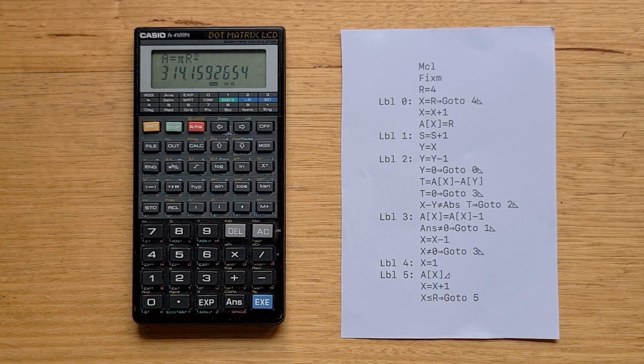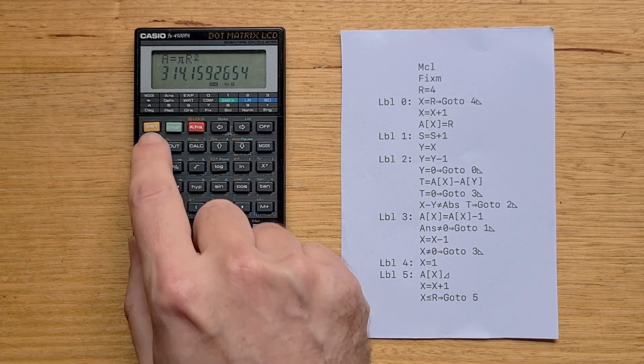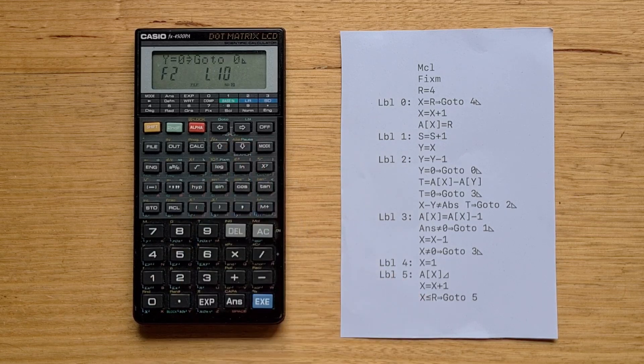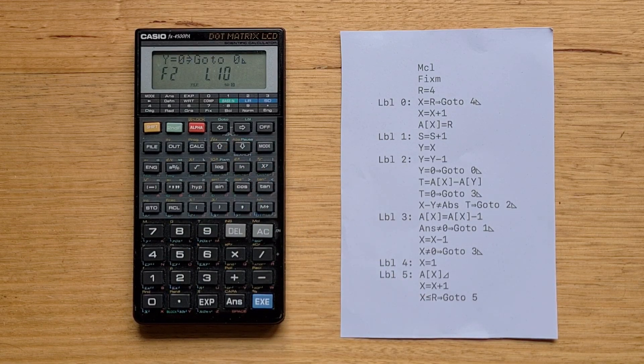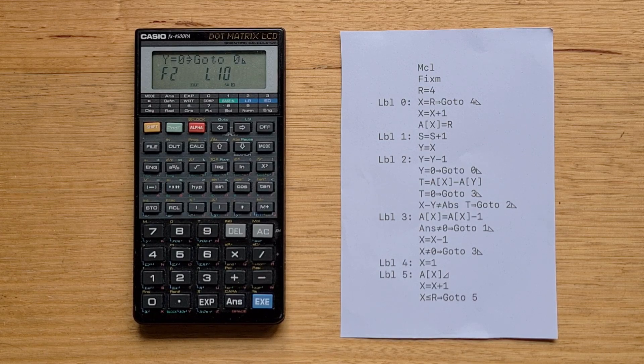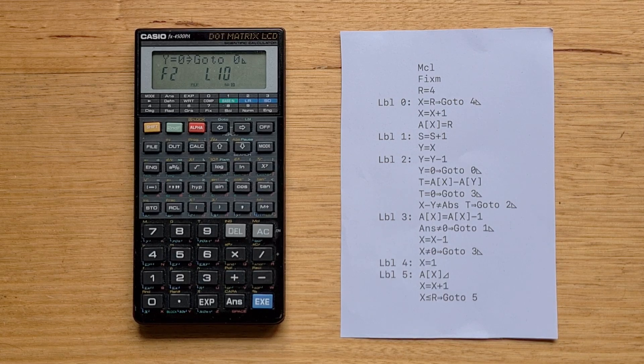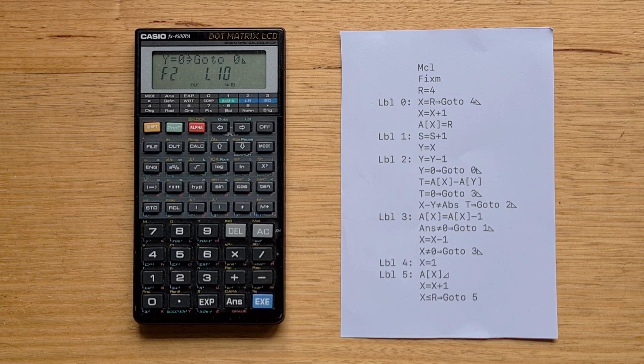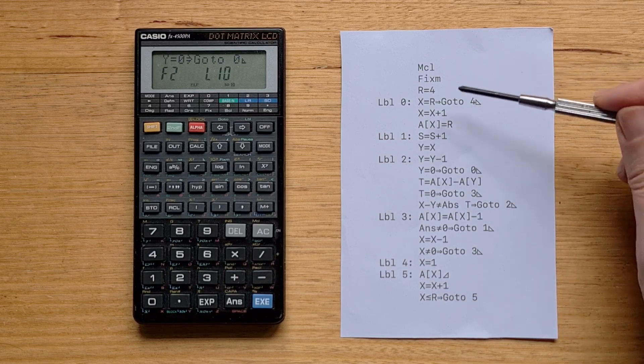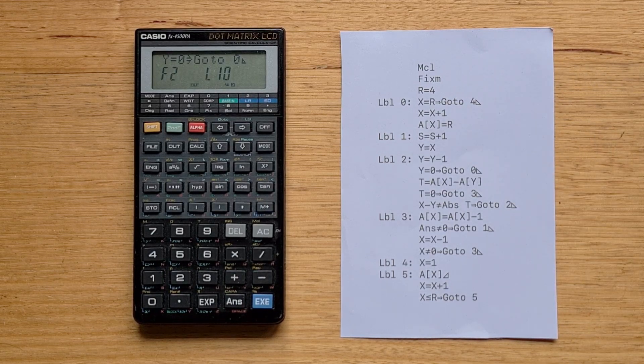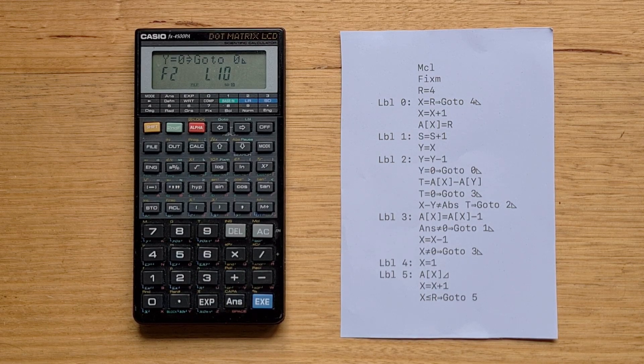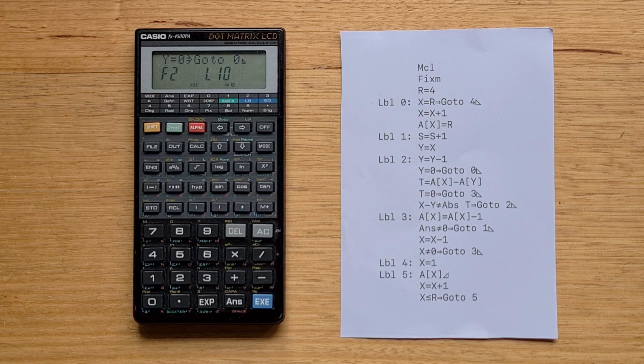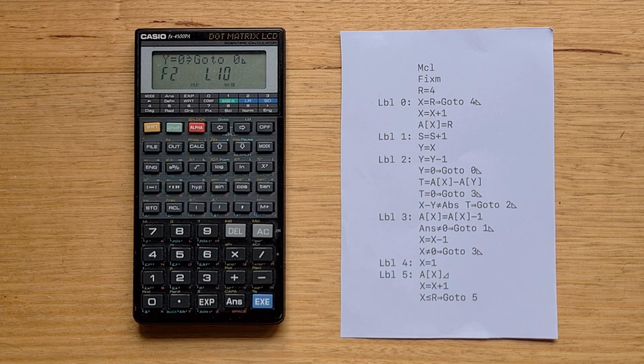I've also entered this program to solve the n queens chess problem. You can use the file key to select the program and the cursor arrows to view the source code. Casio made some odd changes to its programming language in the 4500P. There's a new fix m command that turns off automated prompting for undeclared variables. They also changed the variable assignment syntax, so instead of using a right arrow to assign, you now use the equals character.